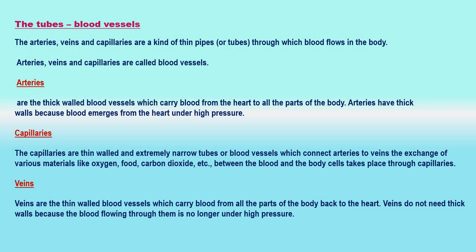The tubes or blood vessels: arteries, veins, and capillaries are a kind of thin pipes or tubes through which blood flows in the body, and they are called blood vessels. Arteries are the thick-walled blood vessels which carry blood from the heart to all parts of the body. Arteries have thick walls because blood emerges from the heart under high pressure. The capillaries are thin-walled and extremely narrow blood vessels which connect arteries to veins. The exchange of various materials like oxygen, food, and carbon dioxide between the blood and the body cells takes place through capillaries.